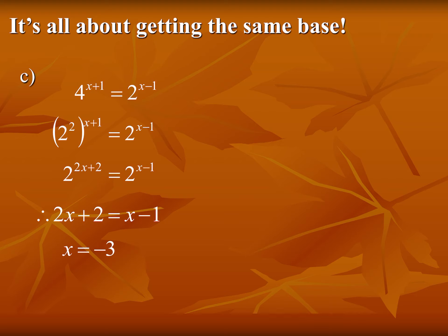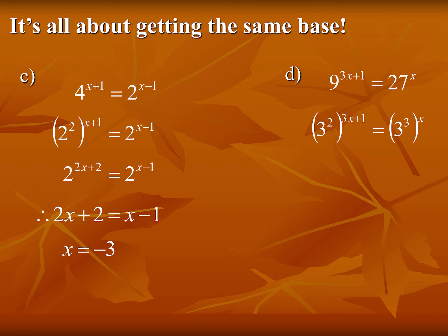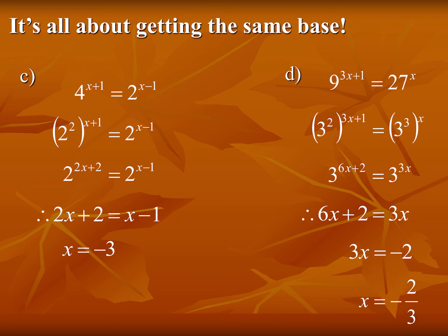The bigger idea is: can we express both sides with the same base? In part d, both sides can be expressed with base three — nine becomes 3², twenty-seven becomes 3³. Distribute those exponents: 2 times 3x is 6x, 2 times 1 is 2, and 3 times x is 3x. With the same base on both sides, drop the base, set the exponents equal, and solve for x. These questions all work because both sides share a common base.